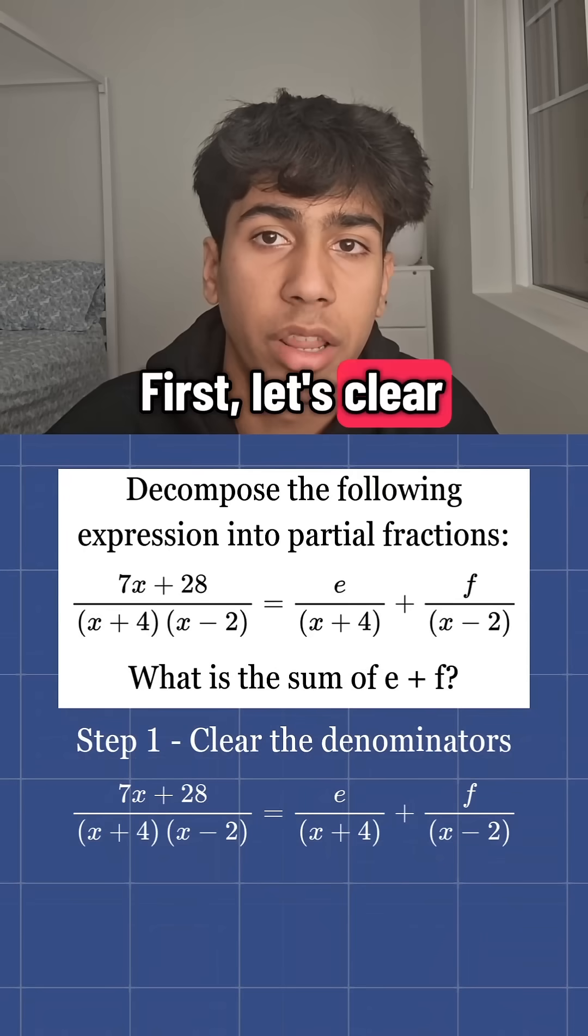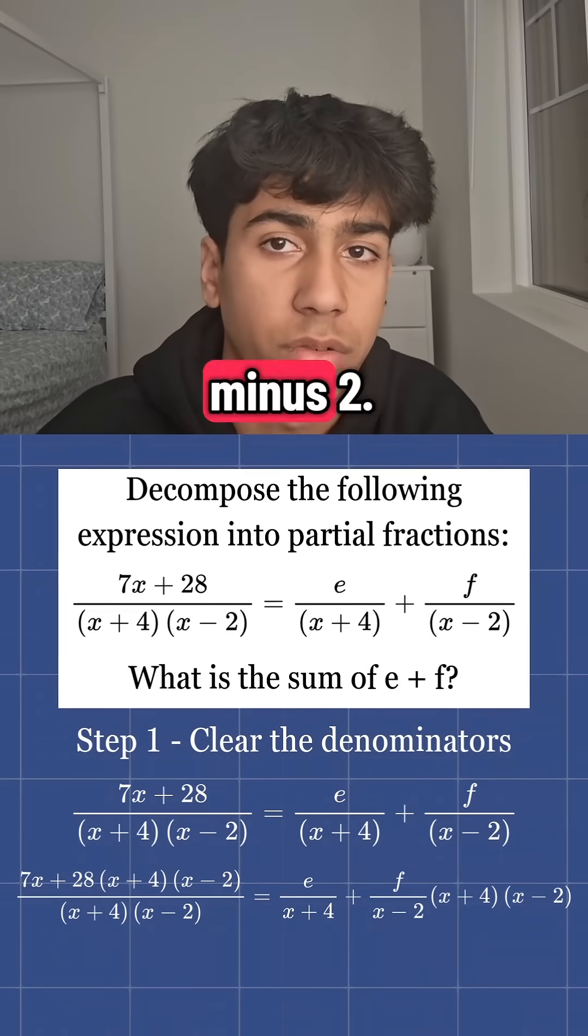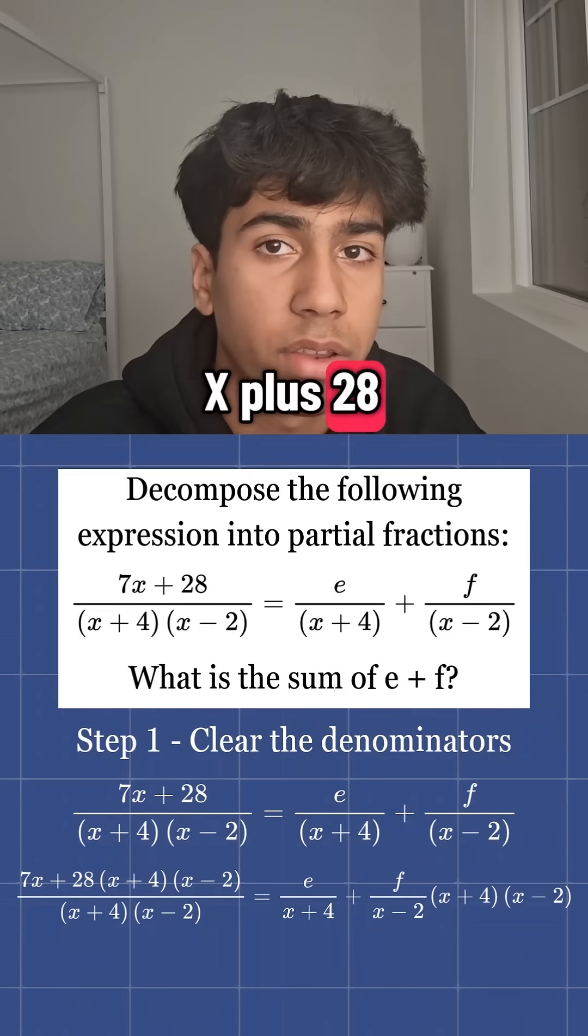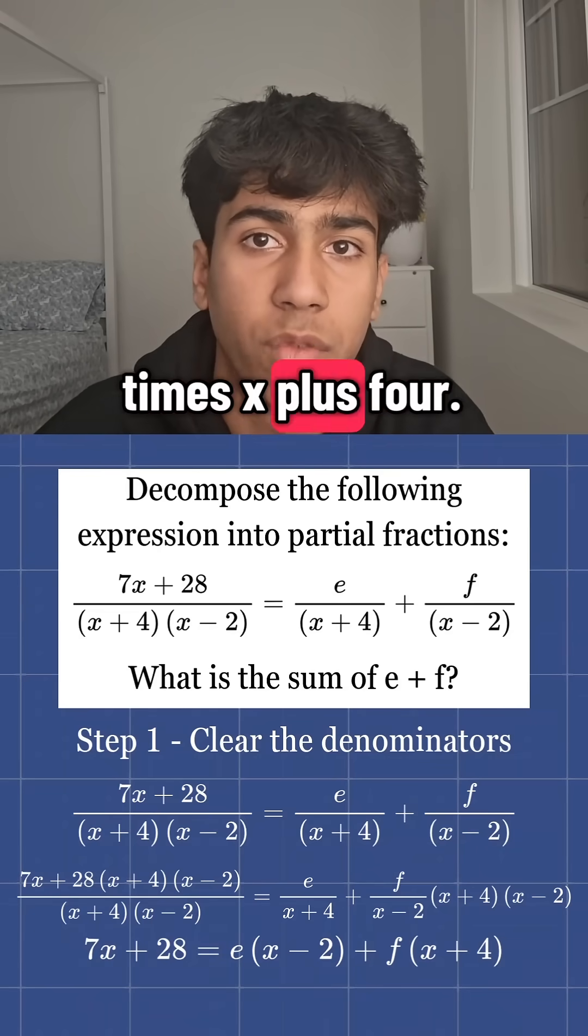First, let's clear the denominators on both sides. Multiply both sides by x plus 4 times x minus 2. You get 7x plus 28 is equal to E times x minus 2 plus F times x plus 4.